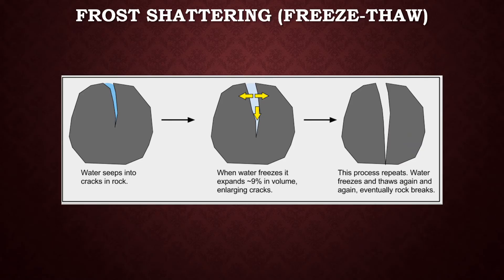The key to understanding any kind of weathering, however, is realizing that it is a process. Frost shattering won't break a rock apart in one night — it can often take many years of repeated freezing and thawing for that to happen. Eventually, the water wins and the rock is shattered into multiple smaller pieces, like we can see in these examples.